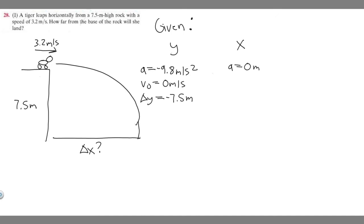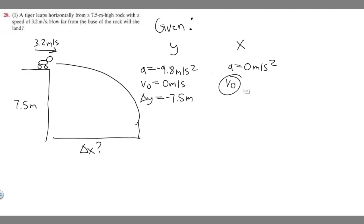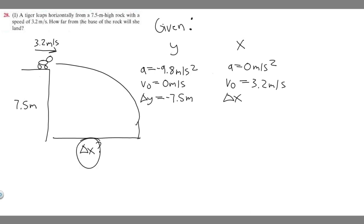For the x direction, we assume acceleration is zero. The initial velocity v-sub-zero is 3.2 meters per second, since the tiger moves horizontally at that speed. Delta x is the change in x position from start to landing — that's exactly what we're solving for.